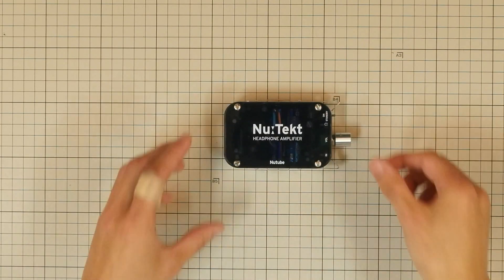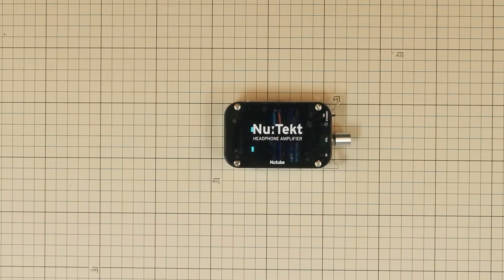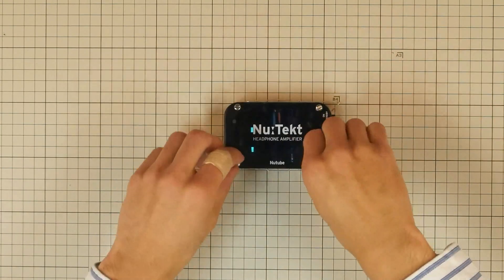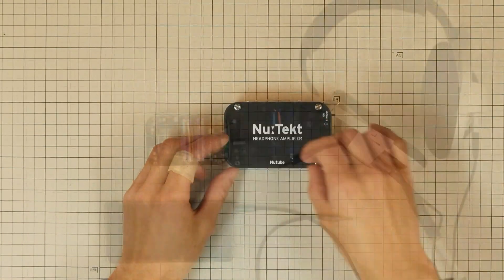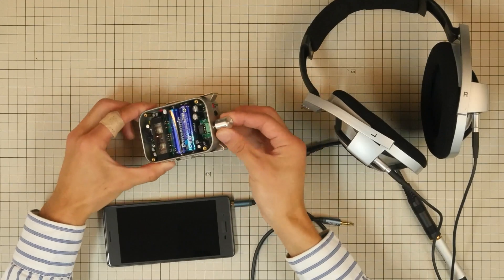The main board comes pre-adjusted at the factory, so you don't have to do anything generally. If you notice a difference in volume between left and right, you can adjust the balance using a trim pot on the main circuit board.